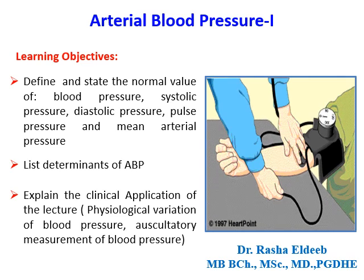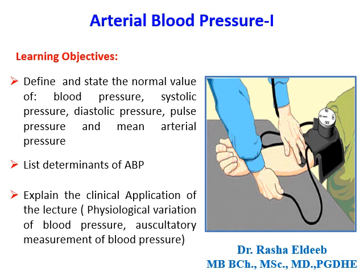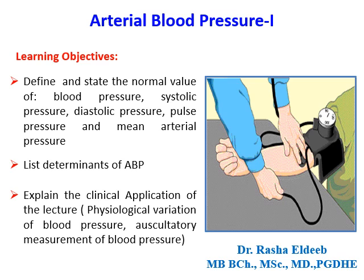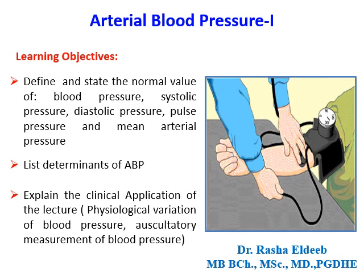Today, we'll be talking about the physiology of the arterial blood pressure. Our learning objectives are to define and state the normal values of the blood pressure: systolic blood pressure, diastolic blood pressure, pulse pressure, and mean arterial blood pressure. We'll also cover the determinants of arterial blood pressure and the clinical applications of today's lecture.